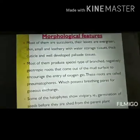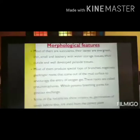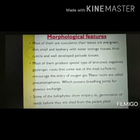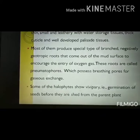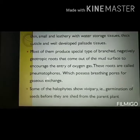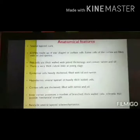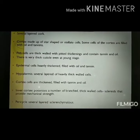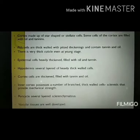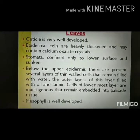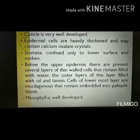The next group is halophytes, plants that grow in saline or salty environmental conditions. They experience physiologically dry conditions — water is present but cannot be properly utilized by the plant. Key adaptations of halophytes include vivipary, where seeds germinate while still attached to the mother plant, and the presence of pneumatophores that help in gas exchange. Anatomically, they have several layers of cork, star-shaped stellar cells, heavily thickened epidermal cells, thickened hypodermis and cortex, a well-developed cuticle, and sometimes milky latex. The mesophyll is well developed.